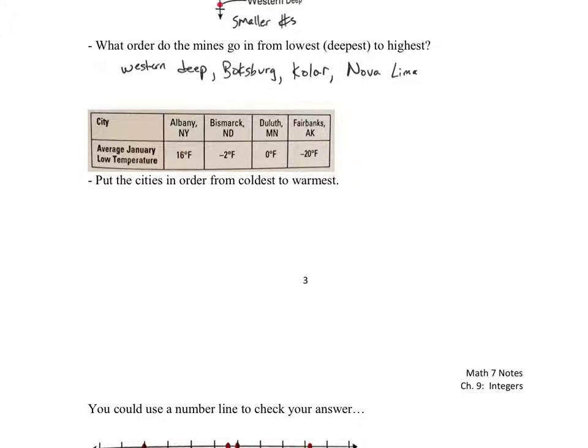All right. Last one here, put the cities in order from coldest to warmest. If you struggle, you could go through and make a number line and say, all right, I need to go from negative 20 to positive 20. And then you could put a zero in the middle, and you could put the cities on there. But typically, you just look for what's the biggest negative number. And that would be that right there. So our coldest is going to be Fairbanks, Alaska.